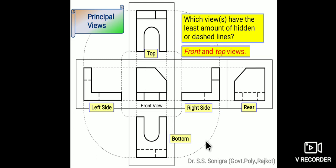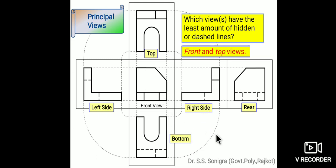Which views have the least number of hidden or dotted lines? In front view and rear view, the front view has fewer dotted lines. In top view and bottom view, the top view has fewer. In left-hand side view and right-hand side view, the right-hand side view has fewer. You should select those views to represent the object in which the least number of hidden lines appear.